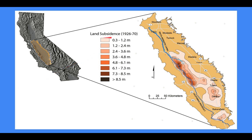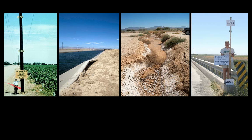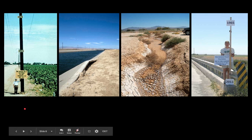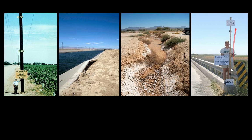This is called subsidence — the land is sinking. Imagine your rubber ducky in the bathtub: when you drain the water, rubber ducky sinks with it. Same idea with the land. We're taking water out and the land sinks. If you look on the left, this is where the land was in 1925, and in 1977 that's where it was — you can see the buckling and subsidence. That is called land subsidence, and it's especially happening in California.